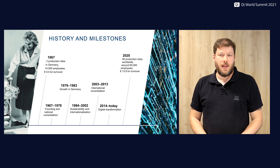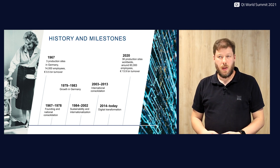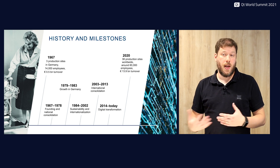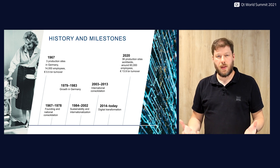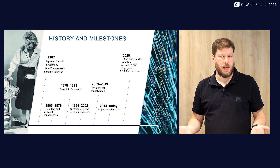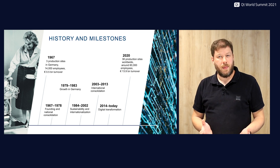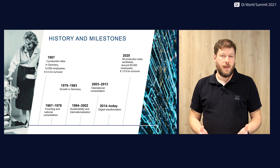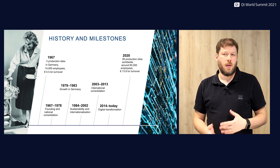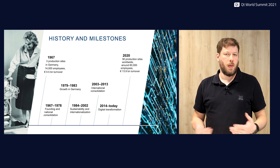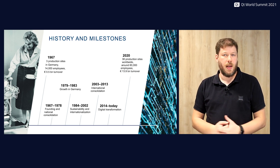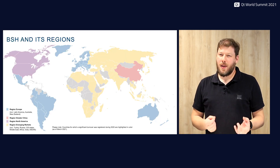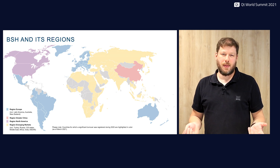BSH was founded in 1967 as a joint venture between Robert Bosch and Siemens. The following years saw strong national growth followed by strong international growth from the 2000s. Since 2014 digital transformation has been one of the most important topics. In 2015 Siemens sold its shares to Robert Bosch and since then BSH has been a subsidiary of the Bosch Group.